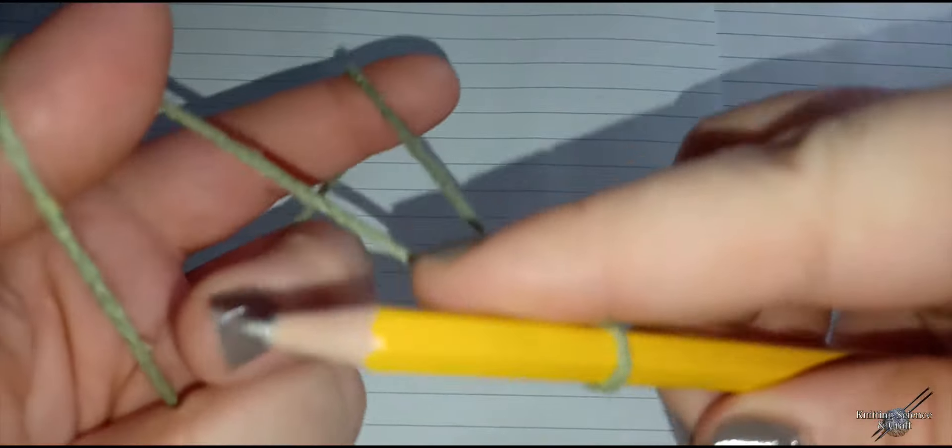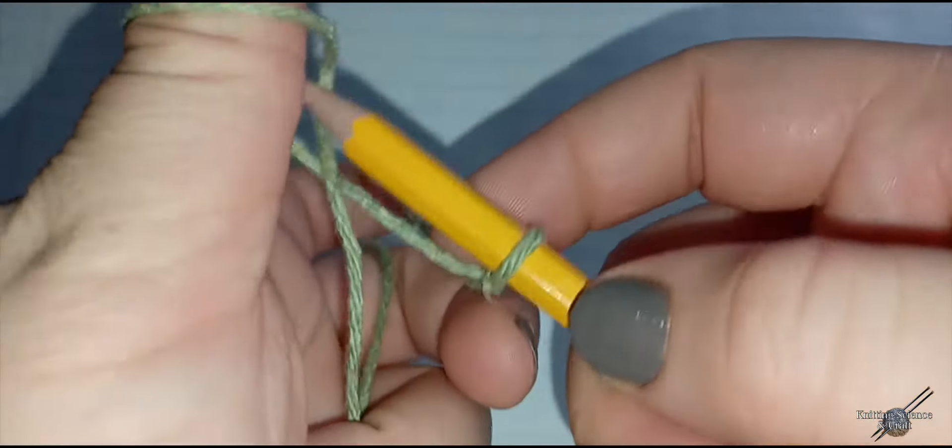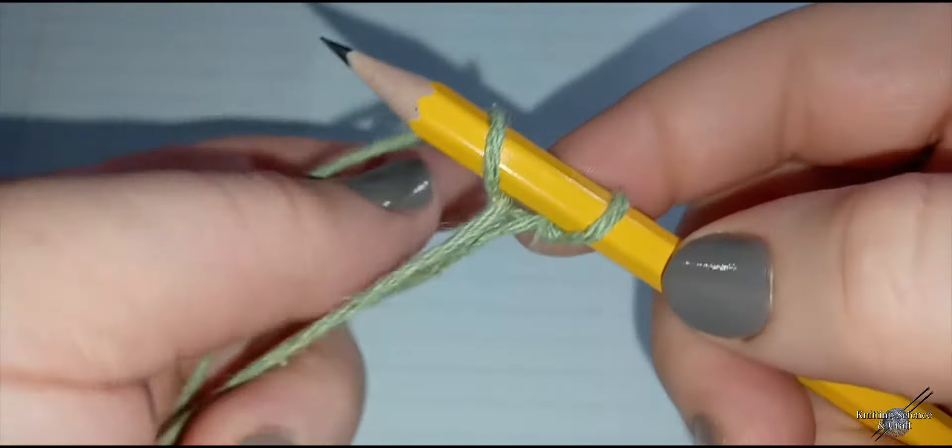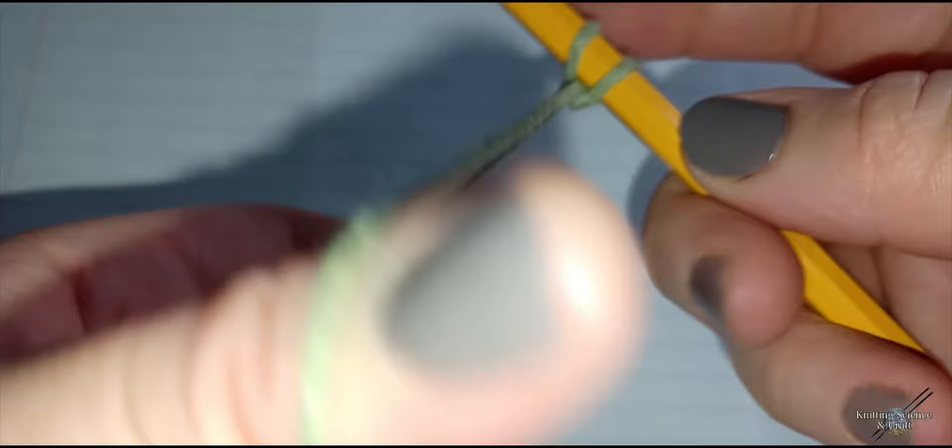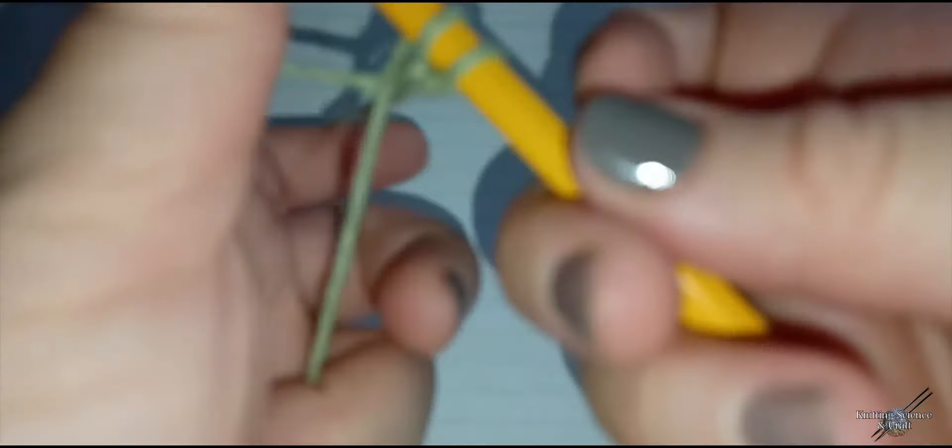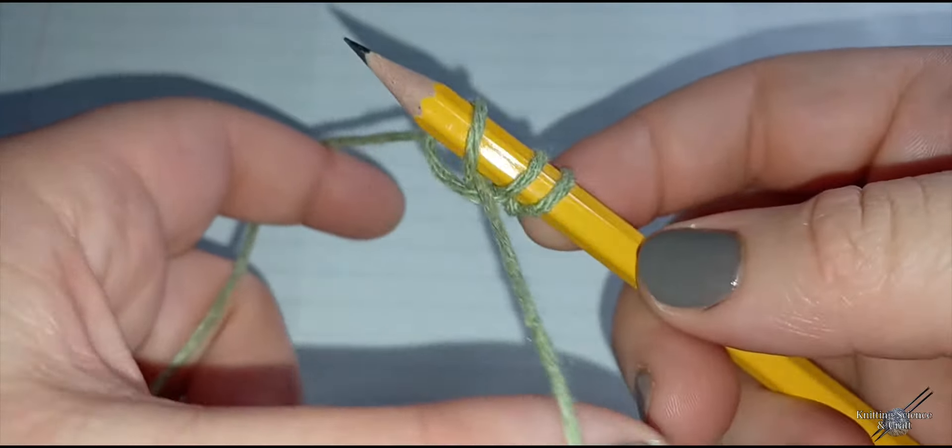Now we're going to do a basic cast on using the slingshot method. You're going to go up under that string and around this one and pull it tight. Now we're going to attempt another one, around this one and around that one and pull it tight.